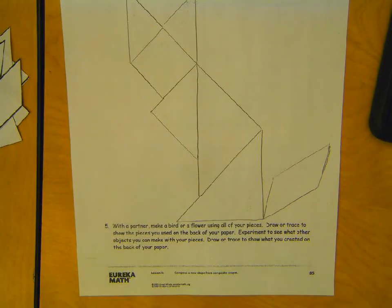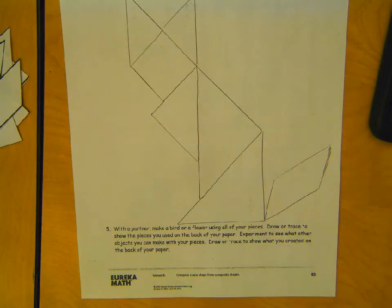So, down at number five, it just says, make a bird or a flower using all of your pieces. That's just, if you have some extra time after tracing the cat, use your tangram pieces to just make a bird or a flower. Okay. When you're done, put this in the done tub. If you don't get a chance to finish, put it in to be finished tray.